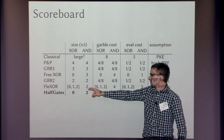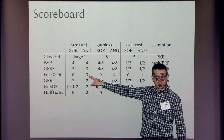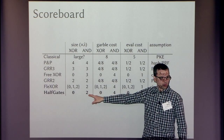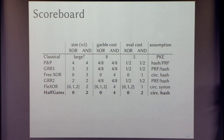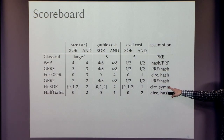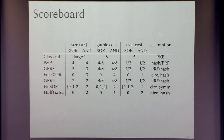Previously we could do two ciphertexts for AND but not in a way compatible with free XOR. Now we can do both. This is clearly better than all previous options — no longer is sometimes free XOR better and sometimes row reduction better. In response to a question about polynomial interpolation cost: using new Intel instructions for field operations, it's about half a single AES operation — not free, but not prohibitive.